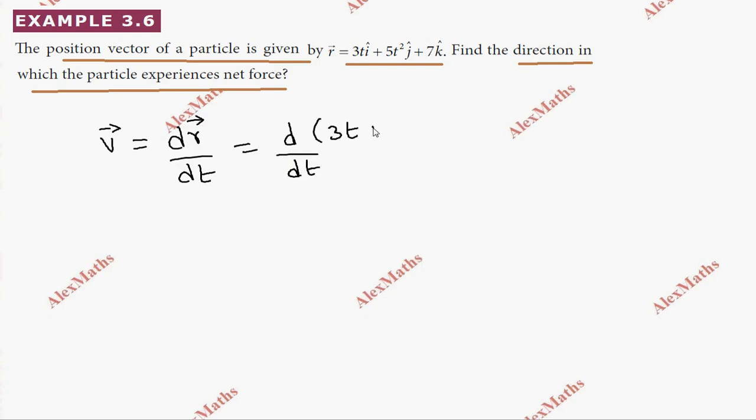So v = d/dt of r vector = d/dt of (3t i cap + 5t² j cap + 7k cap). Differentiating: 3t becomes 3 i cap, 5t² becomes 5 × 2t = 10t j cap, and 7k cap is constant so the derivative is zero.